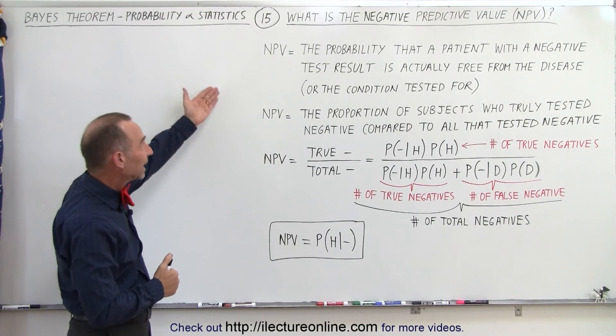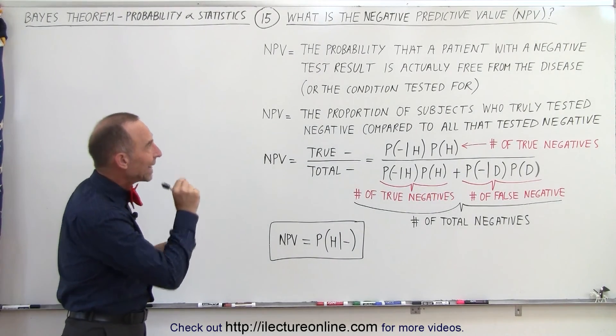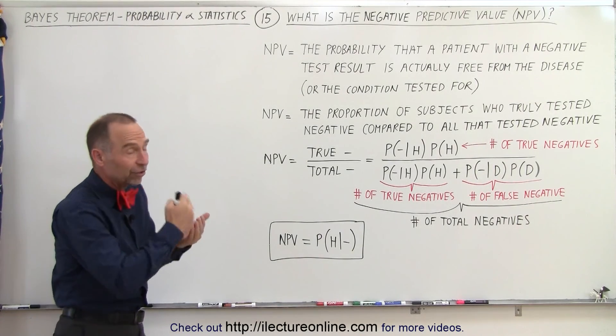By definition, we can say that the negative predictive value is the probability that a patient with a negative test result is actually free from the disease or free from the condition they're tested for.